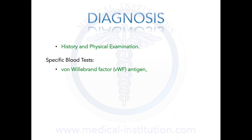We can also do ristocetin cofactor activity. If you introduce ristocetin to a patient's platelets who has a normal amount of von Willebrand factors, it would cause the platelets to all aggregate together. But in the case of von Willebrand deficiency, since the patient is missing von Willebrand factors, ristocetin is not able to cause aggregation of the platelets.